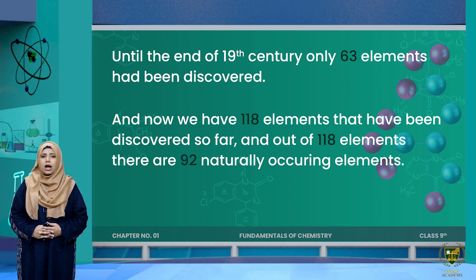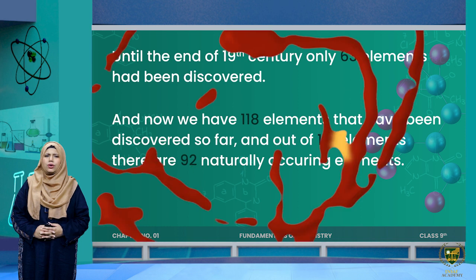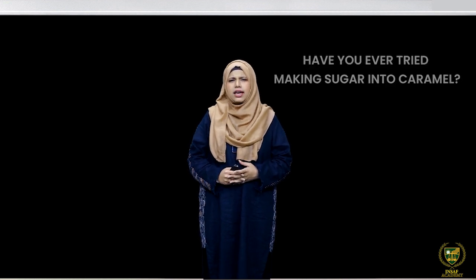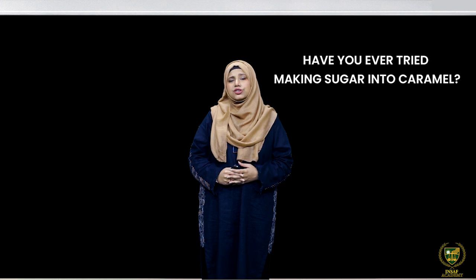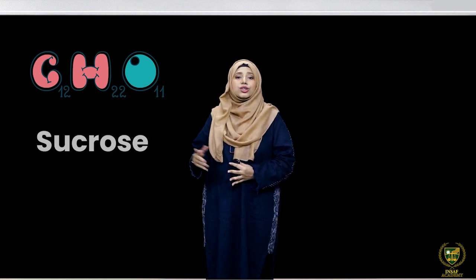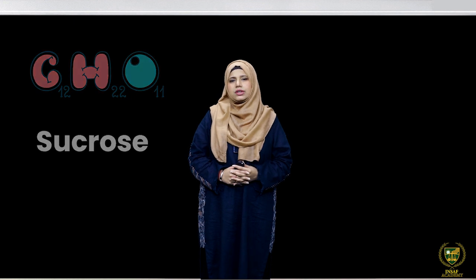Now that we know the brief history of elements and how many elements we have, let's look at what an element actually is. To understand it better, let's go to the visual room. To understand what an element is, let's discuss one example. Have you ever tried making sugar into caramel? The chemical formula for sugar is C₁₂H₂₂O₁₁, and its chemical name is sucrose.